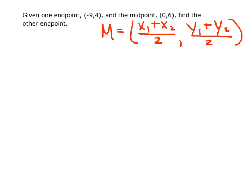Given one endpoint, negative 9, 4, and the midpoint, 0, 6, find the other endpoint.